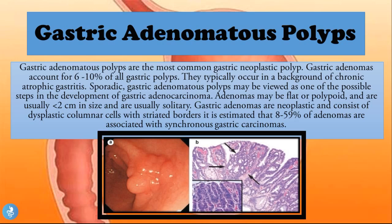The gastric adenomatous polyps are the most common gastric neoplastic polyp — the most cancerous type. Gastric adenomas account for six to ten percent of all gastric polyps and have the most malignant potential. They typically occur in a background of chronic atrophic gastritis, and sporadic gastric adenomatous polyps may be viewed as one of the possible steps in the development of gastric adenocarcinoma.